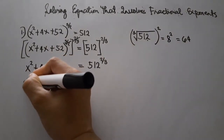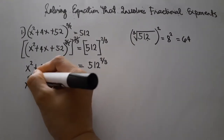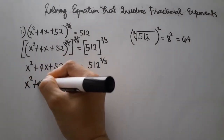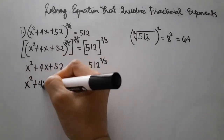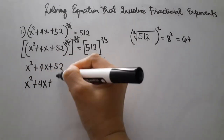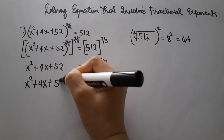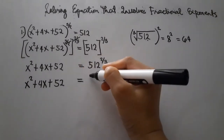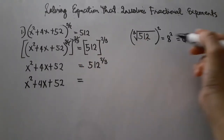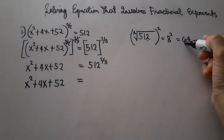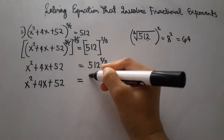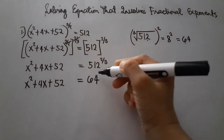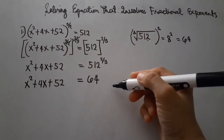We copy the left side — x squared plus 4x plus 52 — and place 64 on the right side. So the equation becomes x squared plus 4x plus 52 is equal to 64.